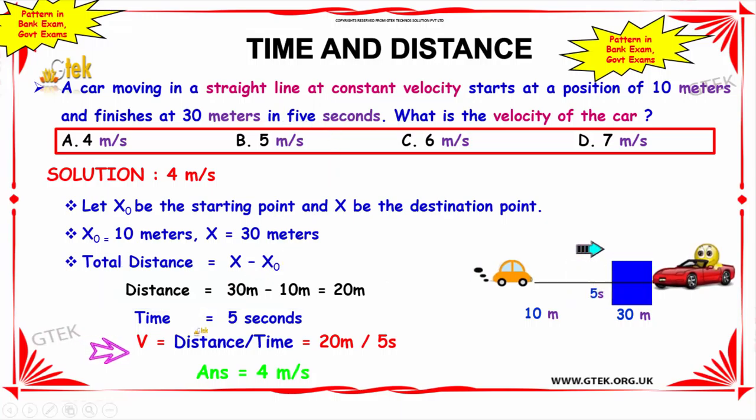So substituting the known values in the formula, v is equal to distance by time, which implies 20 meter by 5 seconds, which is equal to 4 meter per second. Therefore, the option A, 4 meter per second is the answer, which is the velocity of the car.